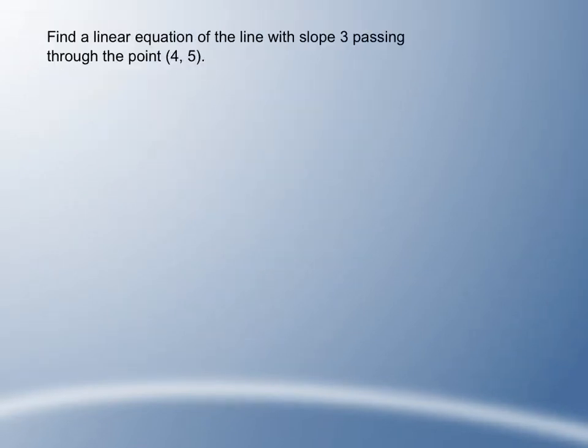First question says, find a linear equation with a slope of 3. So when I see slope of 3, I'm going to write m equals 3. And it passes through the point 4 comma 5. Notice how we're given a point and a slope. Well, when I have that information, I'm going to use the point slope formula.